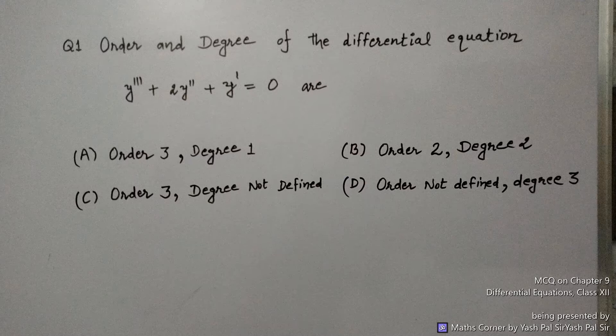Option A: Order 3, Degree 1. Option B: Order 2, Degree 2. Option C: Order 3, Degree not defined. Option D: Order is not defined.